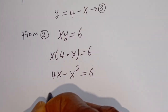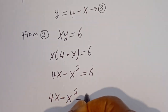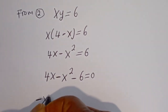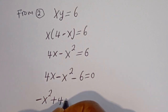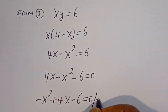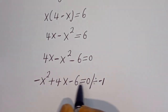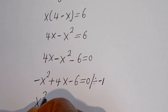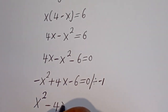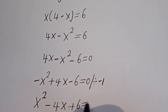Then we have 4x minus x squared minus 6 is equal to 0. Let's rewrite this: minus x squared plus 4x minus 6 is equal to 0. We can now divide all through by minus 1. This gives x squared minus 4x plus 6 is equal to 0.